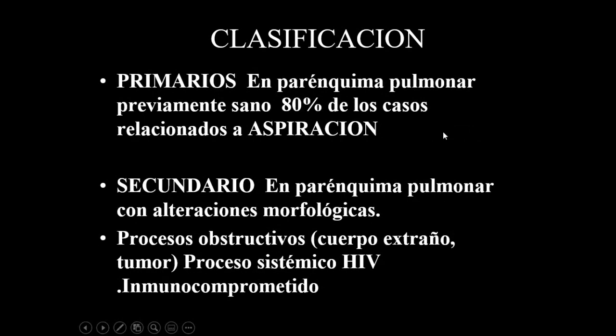Se habla de absceso pulmonar secundario cuando el parénquima pulmonar ya tiene alteraciones morfológicas que lo predisponen, por ejemplo, presencia de cuerpo extraño, procesos obstructivos, procesos sistémicos como el HIV, o paciente inmunosuprimido que tenga alguna infección pulmonar con secuelas.